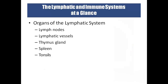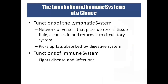Looking at the anatomy and functions: lymphatic vessels are a network of vessels that pick up excessive tissue fluid, then clean it. In between the lymphatic vessels are lymphatic nodes containing lymphocytes that act as checkpoints. These checkpoints identify bacteria, fungi, or protozoa and kill them through phagocytosis. The cleaned fluid is then returned to the circulatory system. Lymphatic vessels in the digestive system also pick up fat absorbed by the digestive system. The immune system fights diseases and infections.